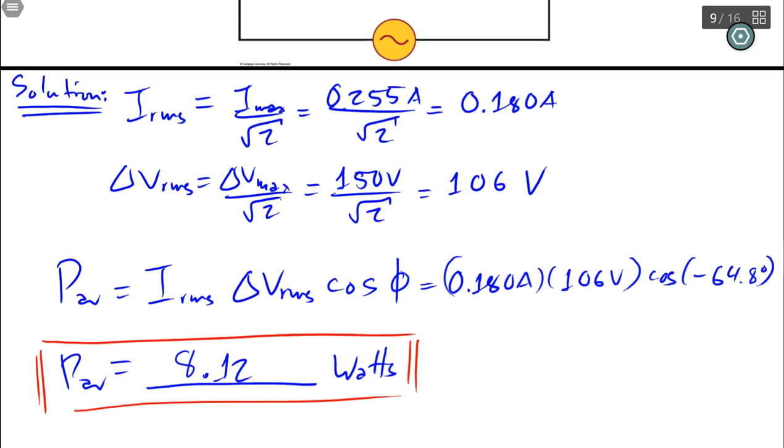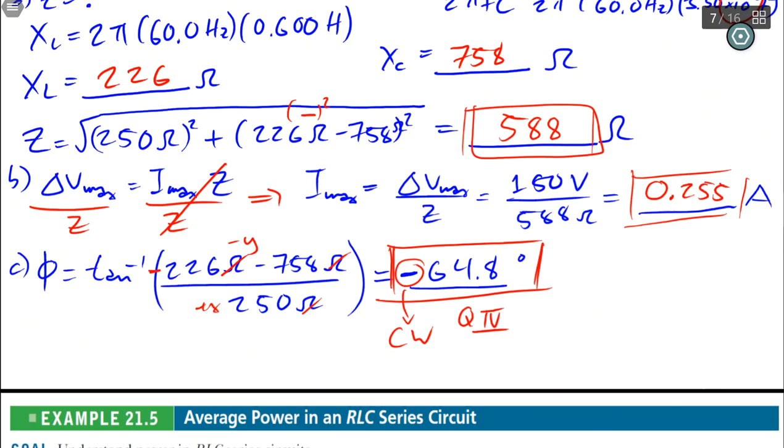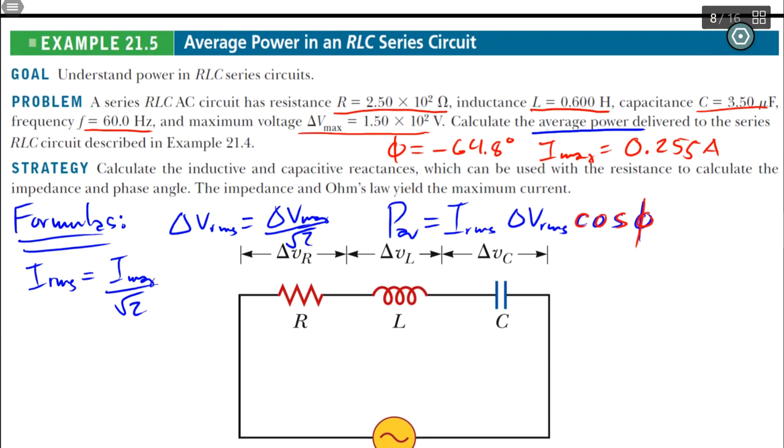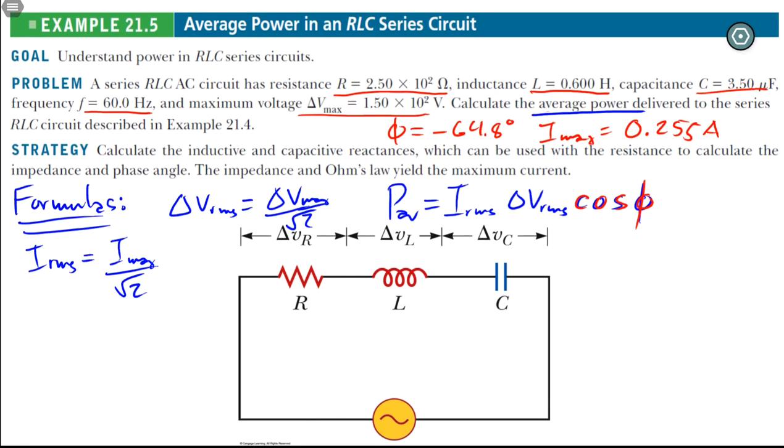I hope you're able to view this in context with a previous problem, this one, and that you learned something on the average power in an RLC circuit using an AC source. Okay. Enjoy. Bye.